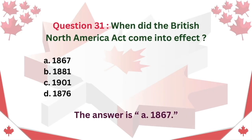Question 31: When did the British North America Act come into effect? A. 1867. B. 1881. C. 1901. D. 1876. The answer is A. 1867.